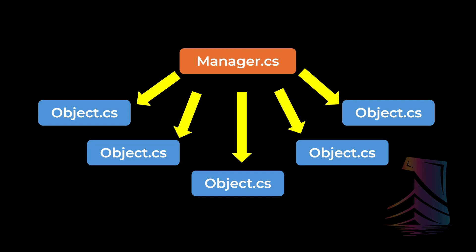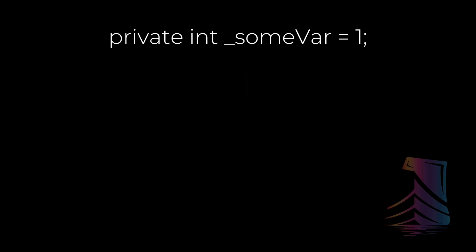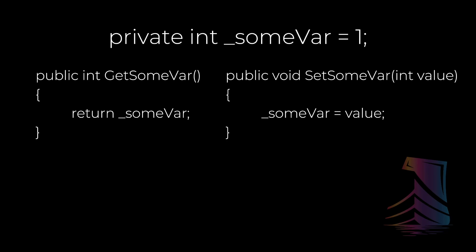Back in the day, and still today with some languages, accessing private data is done using getter and setter methods. A getter returns the value of a private variable, giving outside classes access to see what it is but not change it. A setter allows classes to attempt to change the value via passed method arguments, but there could still be checks done within the class that private variable belongs to. This isn't at all a terrible way to do things. Since adding these methods is in no way required, you can have getters only for the data you wish to share, and you can have setters only for the data you wish to change.